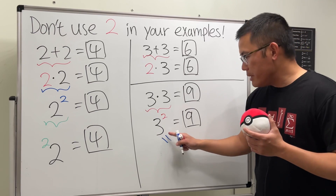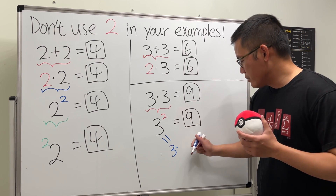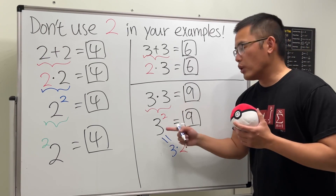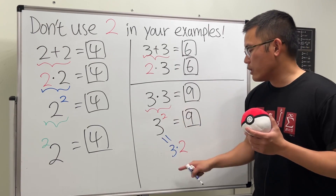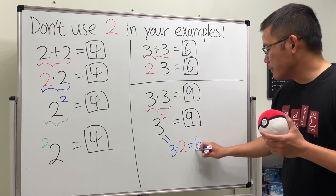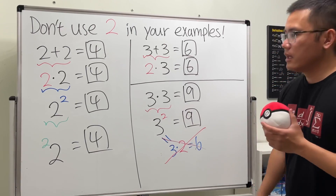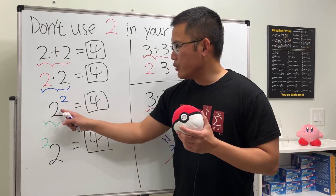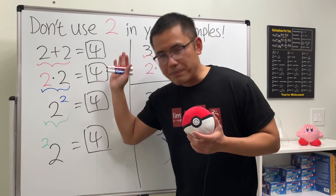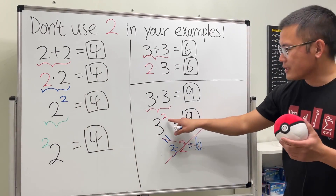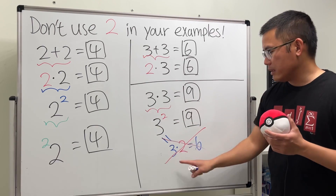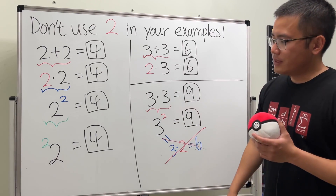This is a very common mistake: when people see 3 to the second power, a lot of students will actually write it as 3 times 2 and say it equals 6. But of course that's incorrect. If you use the number 2, it does look like you just do 2 times 2, which is 4 — it's just a bad coincidence. 3 to the second power means 3 times 3, which is 9. It does not mean 3 times 2.